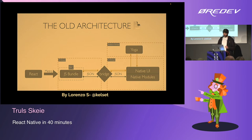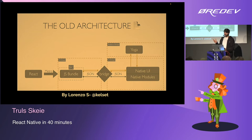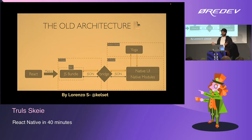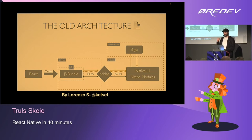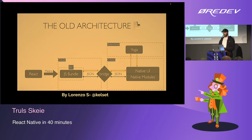Let's go through the limitations of the old architecture. The first is the bridge bottleneck — there is only one bridge, and each communication goes over it. On lower-end Android devices there might be a bottleneck. Everything that goes over the bridge has to be serialized, so all communications are asynchronous by default, meaning the JavaScript side knows nothing about the native side and vice versa.